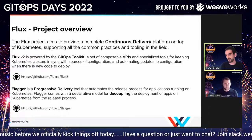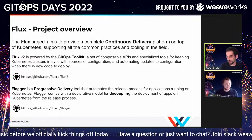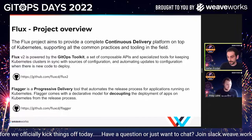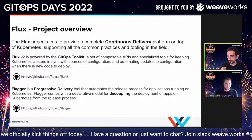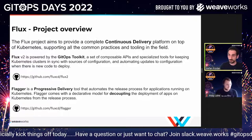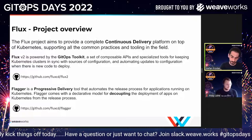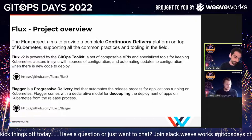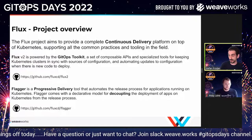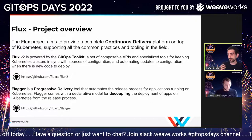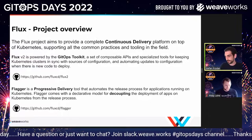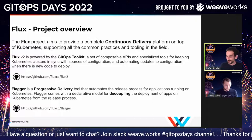What GitOps brings you is that you don't have to connect to the cluster when you want to do an app deployment. You can just push modifications to Git, and Flux running on the cluster will pull those from the Git repo.